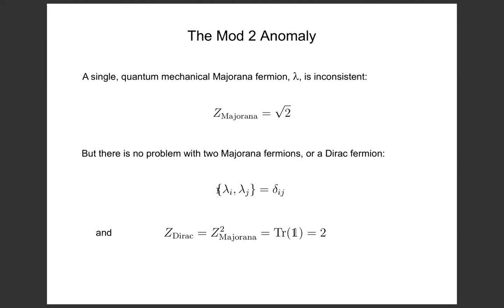However, one Majorana fermion, using tensor product assumptions, has to act irreducibly on a Hilbert space of dimension √2. But there's no such thing as a Hilbert space of dimension √2. What this is telling you is that a single Majorana fermion is not consistent in quantum mechanics. There's also a more direct calculation: you can compute the partition function using the path integral with anti-periodic boundary conditions on time, and you get √2 for the dimension of the Hilbert space — which doesn't make sense.